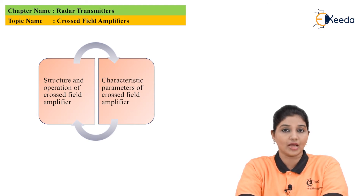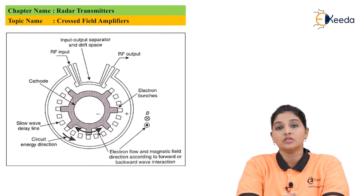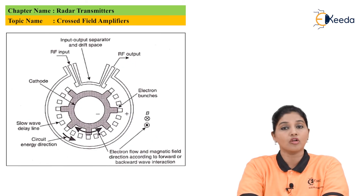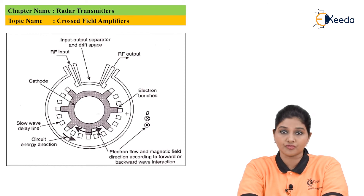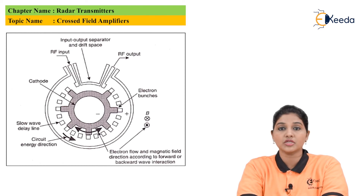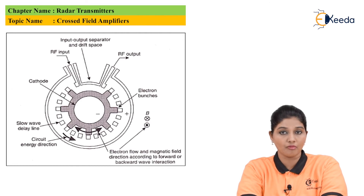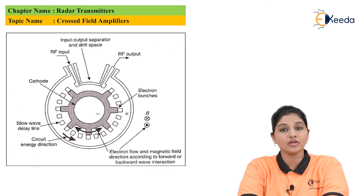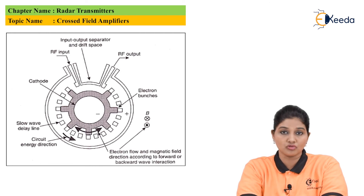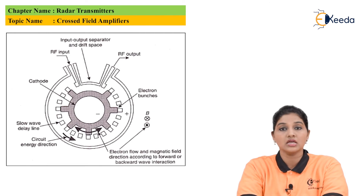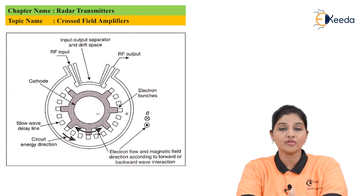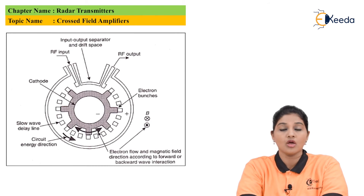Now let's see the classification of the cross-field amplifier. It has two types of classification. The first is based on the type of mode: on this basis, the cross-field amplifier is classified as forward wave amplifier and backward wave type. On the basis of the electron source, it is classified as injected type and emitting sole type. In the forward wave type, a simple spiral or helix structure is used in the microwave circuit, whereas in the backward wave type, strapped line bars are used.